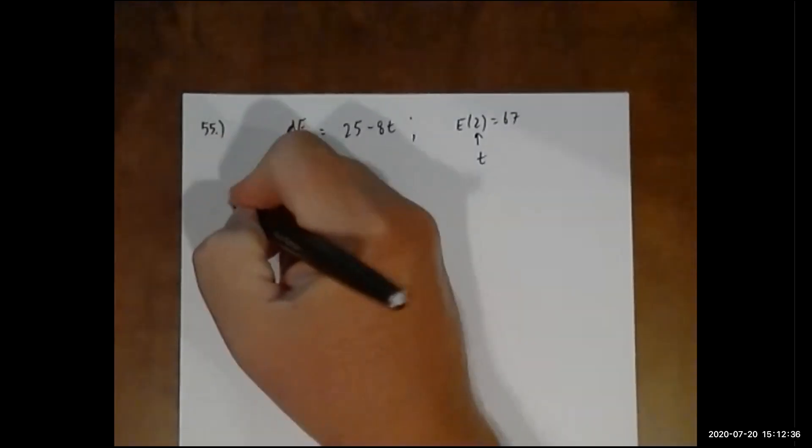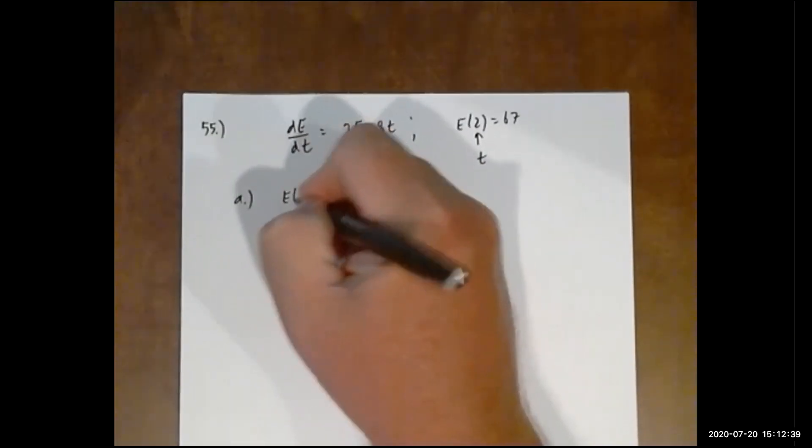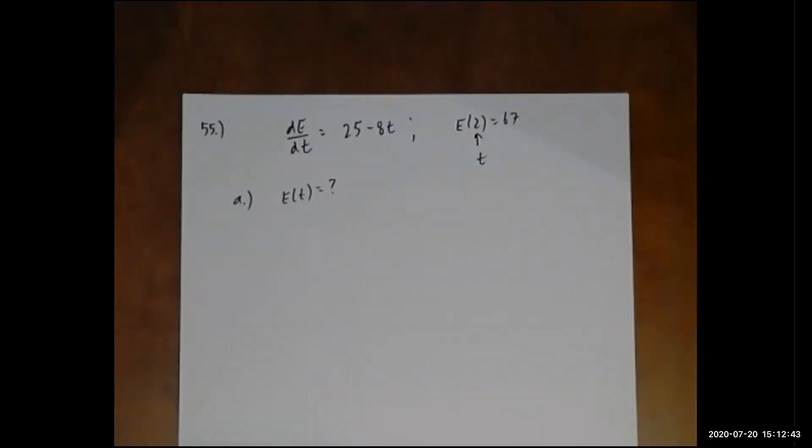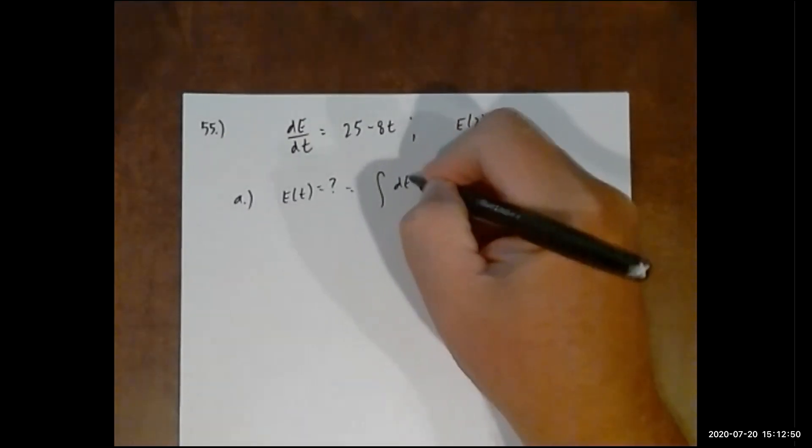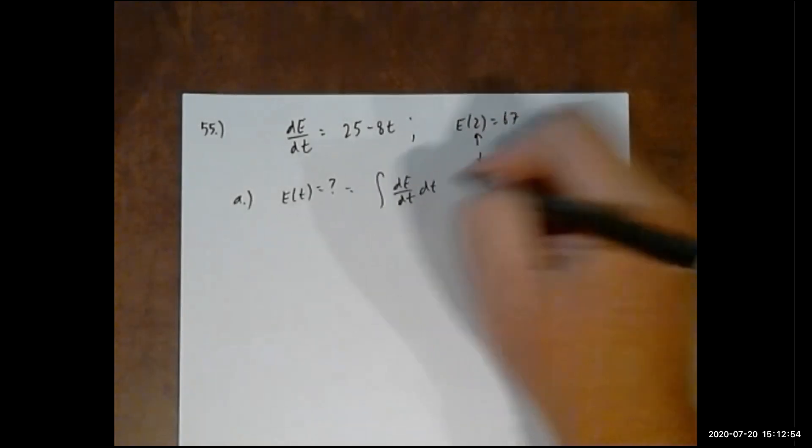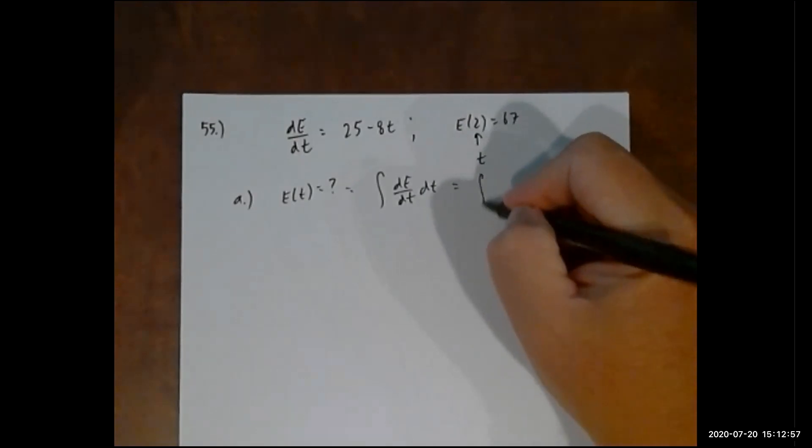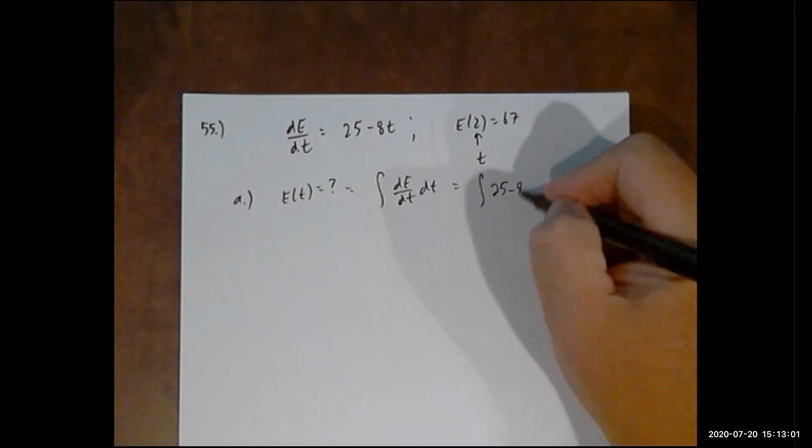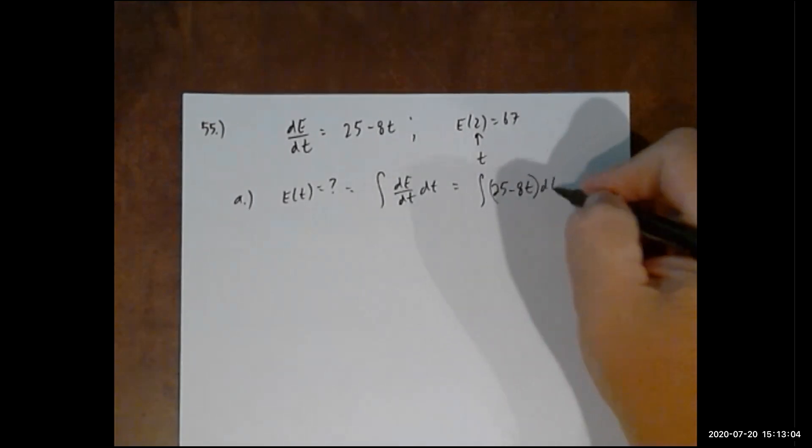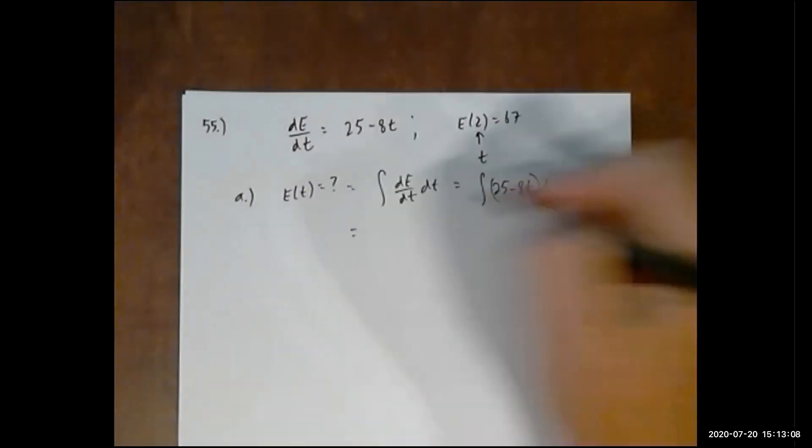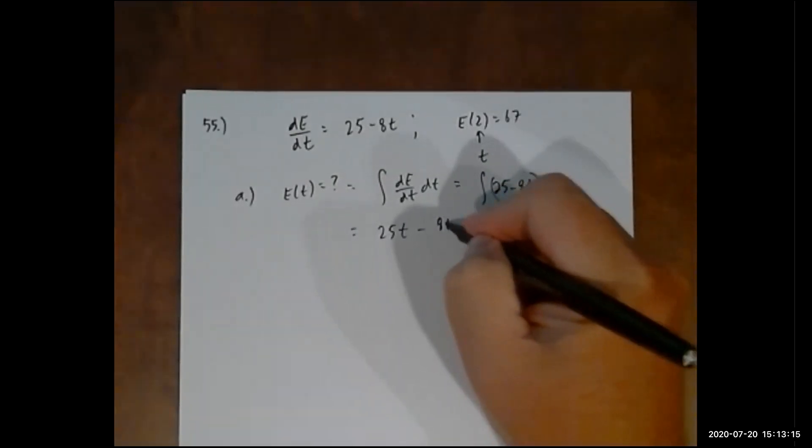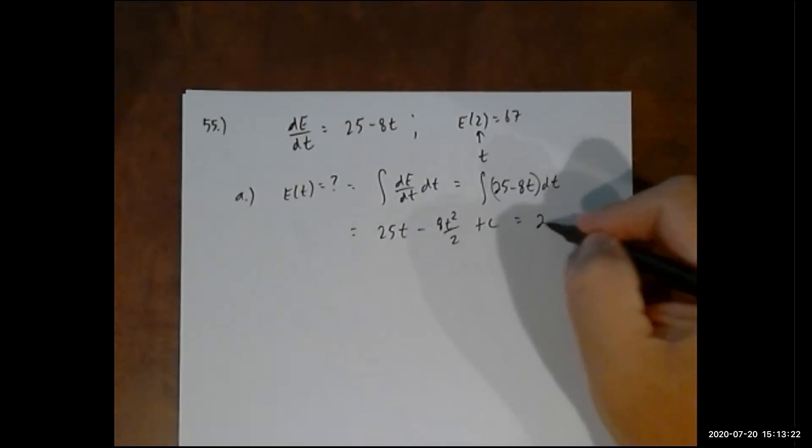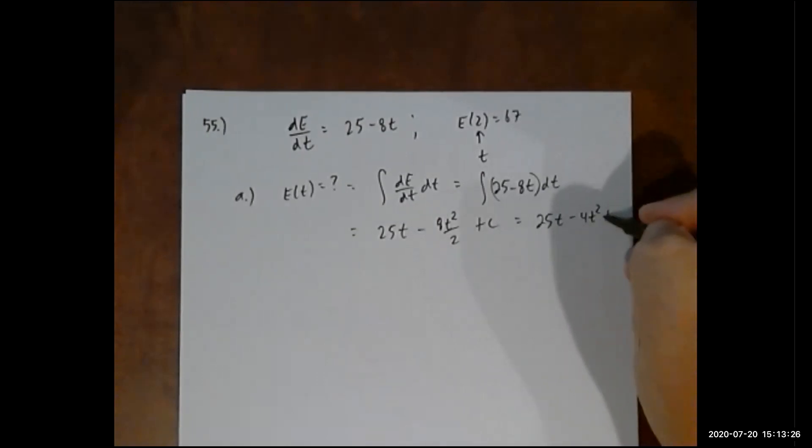Part A: we want to find out what this function E is. We're going to take the integral of dE/dt with respect to time. I plug in 25 minus 8t. Pretty straightforward derivative. I have two terms, so 25t minus 8t squared over 2 plus C.